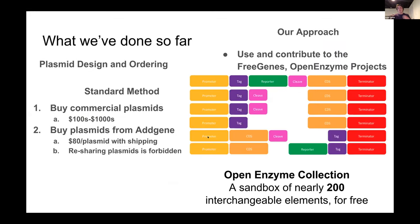For cell and strain selection: the standard way research labs make proteins is with E. coli, but our approach goes more towards what industry uses — Bacillus subtilis as bacteria and Pichia pastoris as yeast. These cell types are really good at secreting enzymes, which streamlines downstream processing and bypasses expensive equipment. For plasmid design: rather than buying commercial plasmids for hundreds of dollars or plasmids from Addgene at $80 each with material transfer agreements forbidding resharing, our approach is to use and contribute to the Free Genes and Open Enzyme projects, which distribute collections of wetware for free under an open MTA allowing modification, resharing, and commercialization.